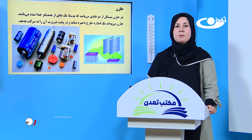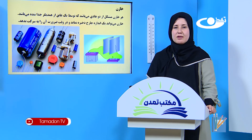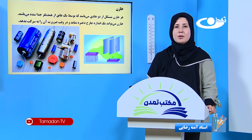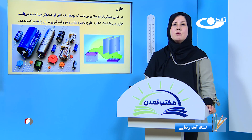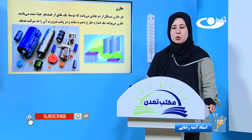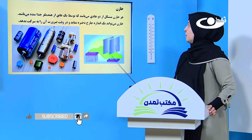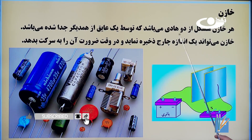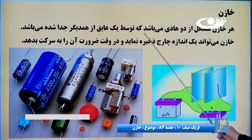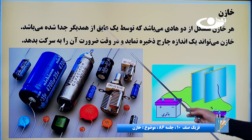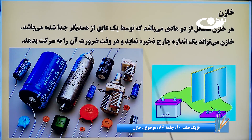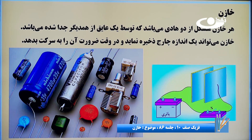بسم الله الرحمن الرحیم. سلام، شاگردان نازنین، امیدوارم که حال همگیتان خوب باشد. امروز با هم درس خازن‌ها را شروع می‌کنیم. هر خازن متشکل از دو هادی می‌باشد که توسط یک آیق از هم دیگر جدا شده می‌باشد. خازن می‌تواند یک اندازه چارج ذخیره نماید و در وقت ضرورت آن را به سرکت بدهد.